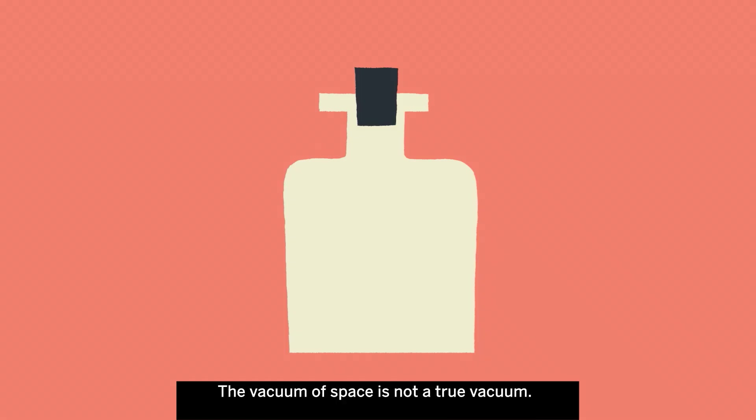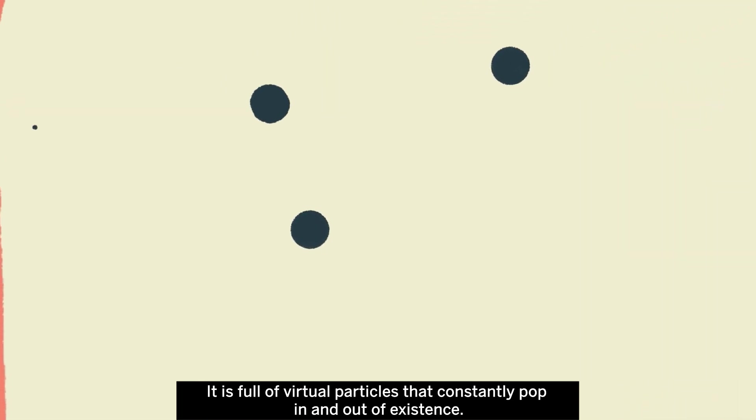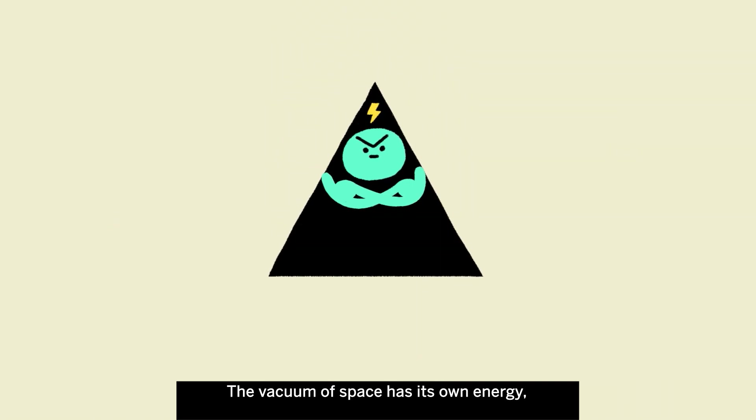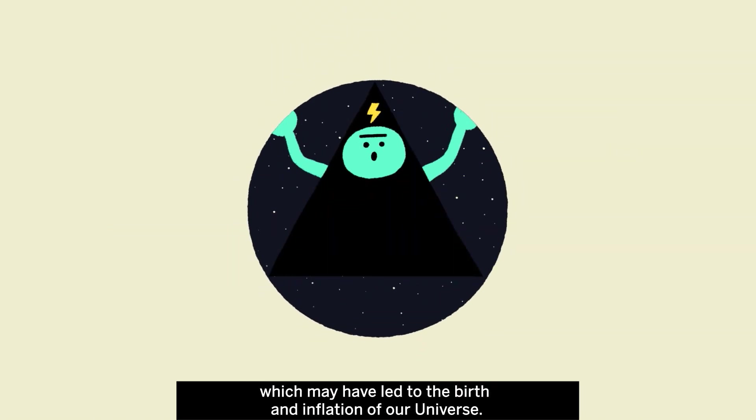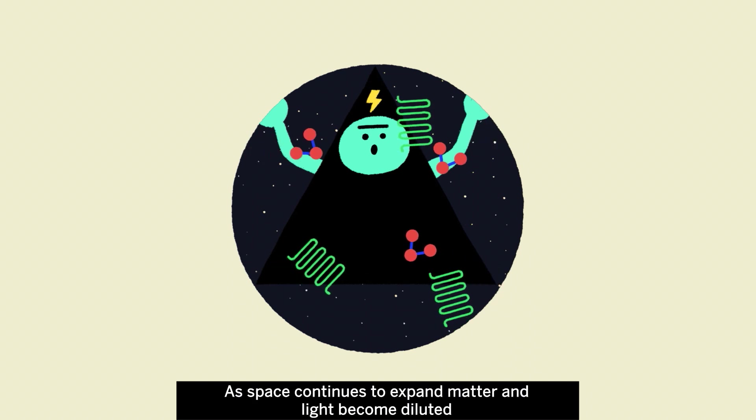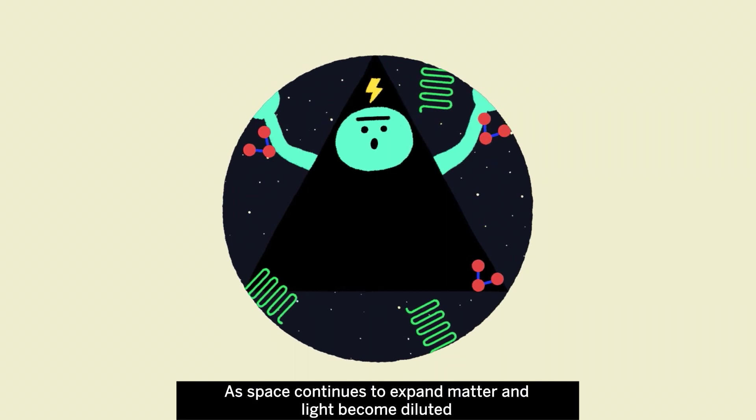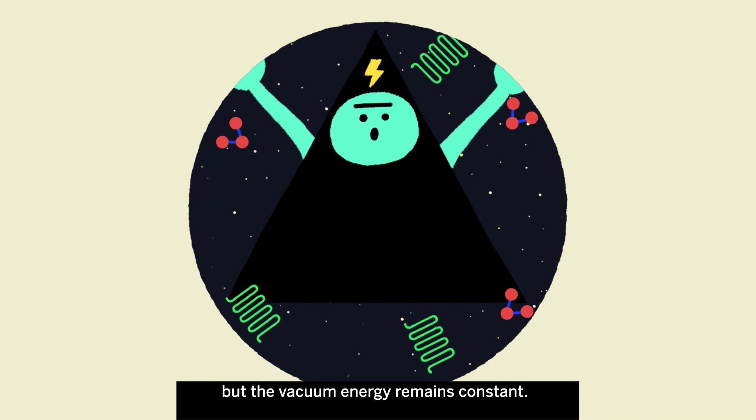The vacuum of space is not a true vacuum. It's full of virtual particles that constantly pop in and out of existence. The vacuum of space has its own energy, which may have led to the birth and inflation of our universe. As space continues to expand, matter and light become diluted, but the vacuum energy remains constant.